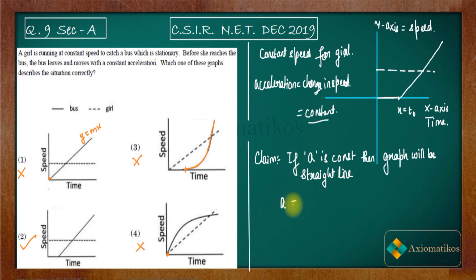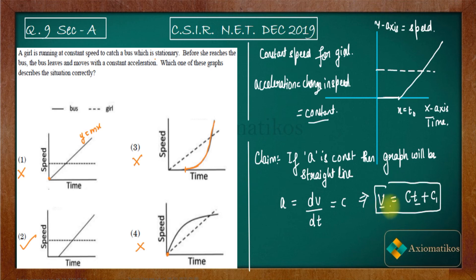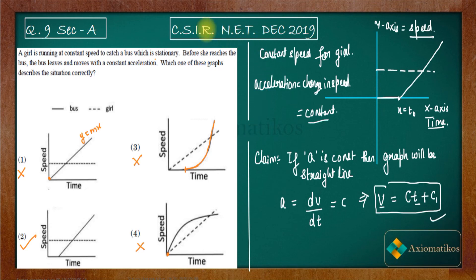Acceleration means dv/dt, and it is given to be constant. Integrating both sides of dv/dt = c gives v = ct + c₁, where c and c₁ are constants. This is the equation of a straight line between velocity and time. So we have proved that constant acceleration implies a straight-line speed-time graph.